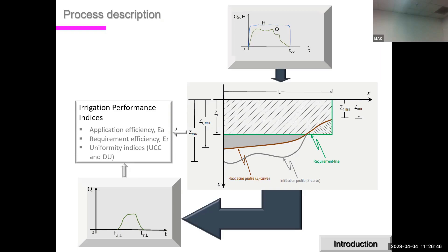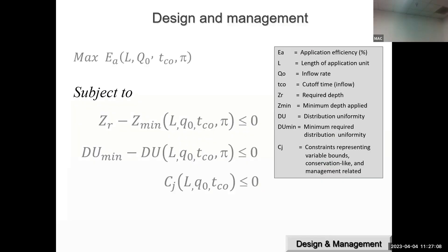The effectiveness of an irrigation event is measured by three performance indices: application efficiency (maximizing beneficially used water), water requirement efficiency (how well the system meets crop requirements), and uniformity (spatial distribution of applied water). Design and management is typically formulated as an optimization problem — maximizing application efficiency subject to constraints on adequacy, distribution uniformity, and variable bounds or management-related constraints.